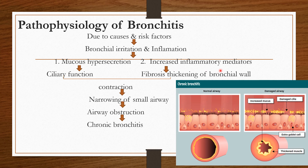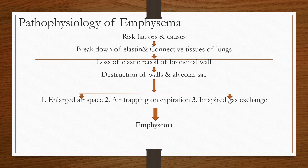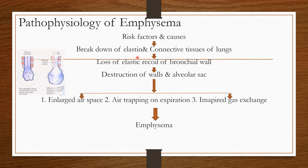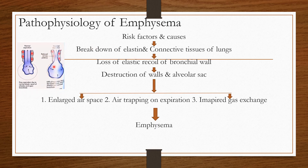Increased inflammatory mediators are released. The bronchial wall becomes thick, leading to contraction. The bronchioles are narrow. This leads to chronic bronchitis. The risk factor causes it to lead to breakdown of elastin and connective tissue.